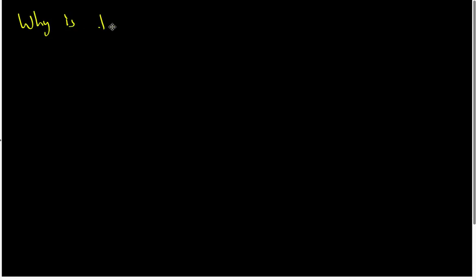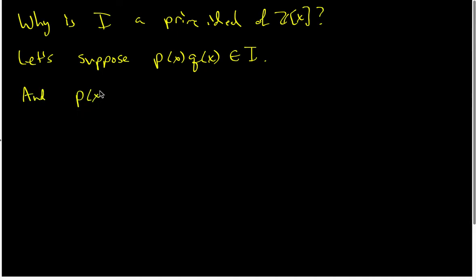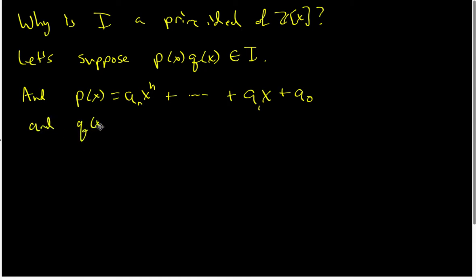So let's look at the first claim: why is I a prime ideal of Z[X]? Well, let's suppose that P(X) times Q(X) does indeed belong to I. I know that P(X) is in Z[X], so I can write it as Aₙ Xⁿ + ··· + A₁X + A₀. And Q(X) is also inside Z[X].